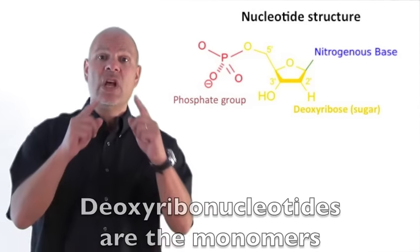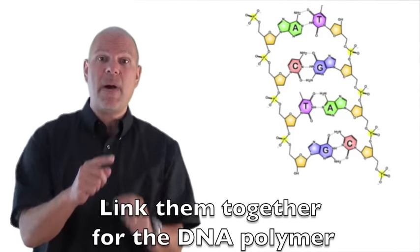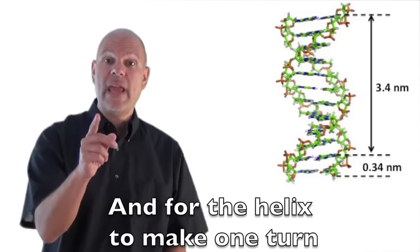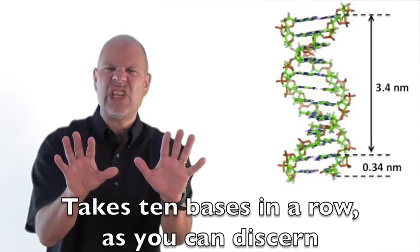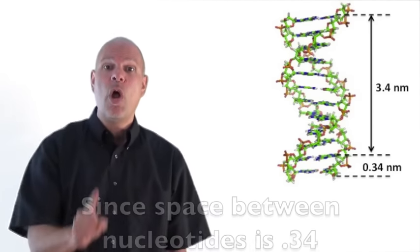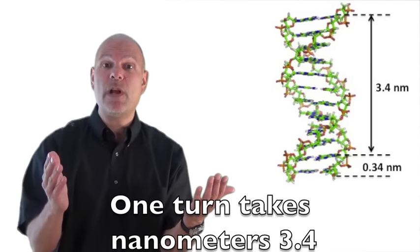Deoxyribonucleotides are the monomers, link them together for the DNA polymer. 0.34 nanometers marks the space between one nucleotide and the next one's place. And for the helix to make one turn, takes ten bases in a row as you can discern. Since space between nucleotides is 0.34, one turn takes nanometers 3.4.